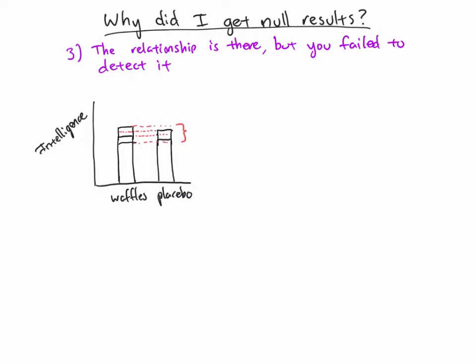When I say randomness or chance, what's really happening is that we have a whole bunch of extraneous variables that could impact intelligence — things other than the independent variable, other than waffles, that could be impacting someone's intelligence. So those extraneous variables are having random influences in the different groups, making it so that sometimes this group has a higher intelligence and other times the other group does. These are just random chance fluctuations that mostly equal out, but there's some lack of equality because randomness is probably never going to equal out completely.